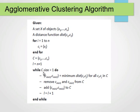We then loop through them, find the two most similar clusters in C, remove those two clusters, merge them, add the merged cluster back to C, and continue looping until we end up with only one large cluster.